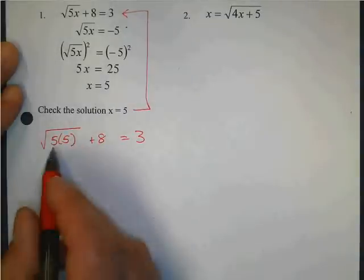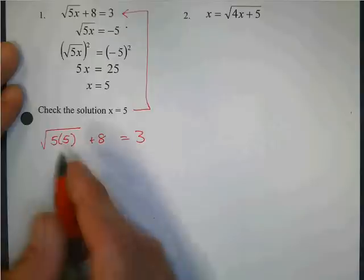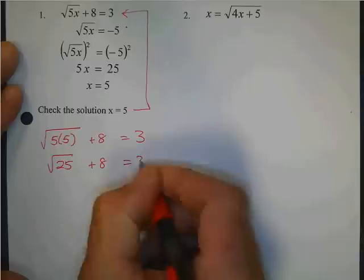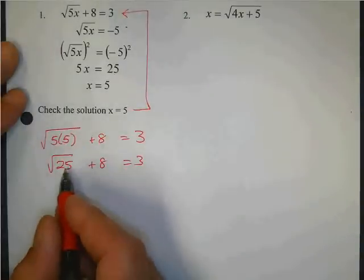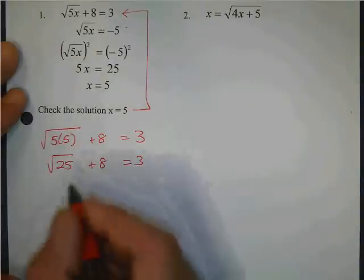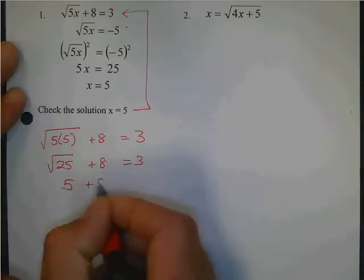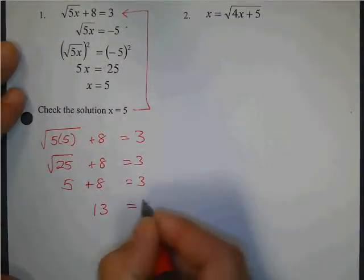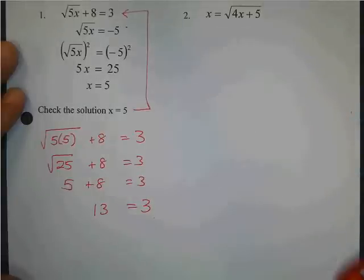The square root of 5, parenthesis 5, plus 8, equals 3. 5 times 5 is 25. Plus 8 equals 3. Square root of 25? 5. Plus 8 equals 3. 5 plus 8? I'm afraid to tell you that 13 does not equal 3.